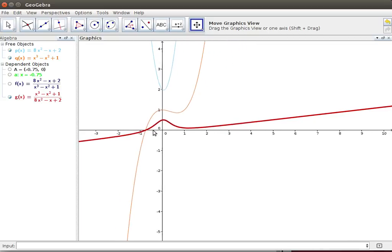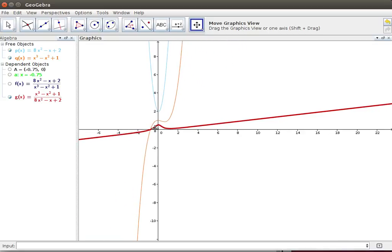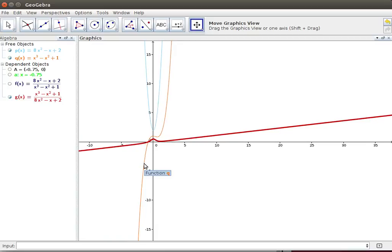So as we zoom out, this has an oblique asymptote along that straight line. Now we can find what that straight line is by carrying out the division of these two polynomials.